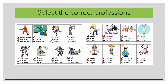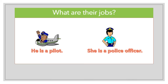She is a police officer. And the last one — what's his job? He is a cook. Now here we have two examples: what are their jobs?